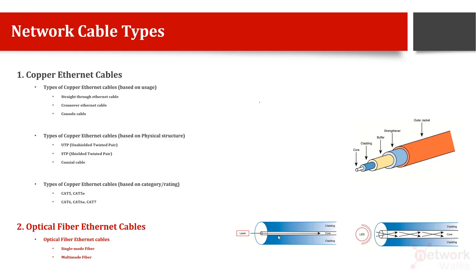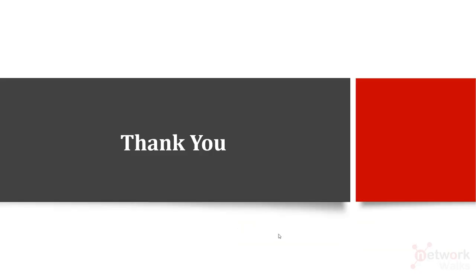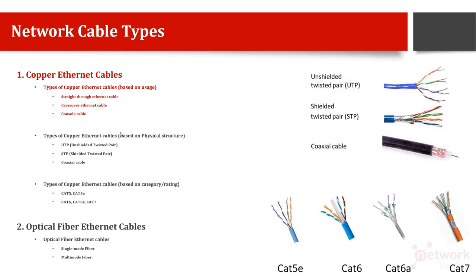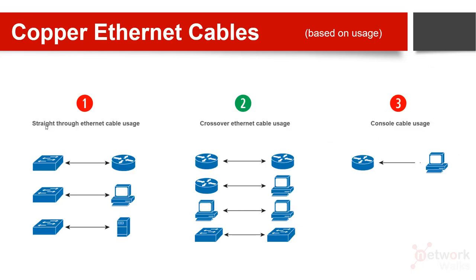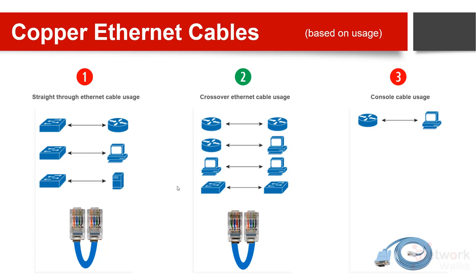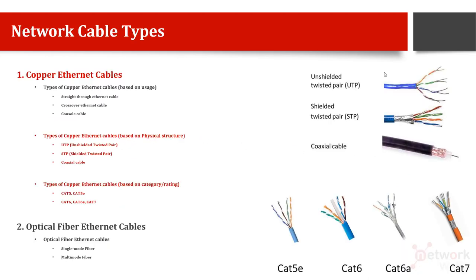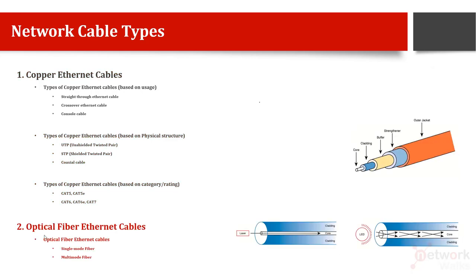To summarize: there are two main cable types — copper and optical fiber. Within copper, there are three classifications: by usage (straight-through, crossover, console), by physical structure (UTP, STP, coaxial), and by category or rating (Cat 5, 6, 7, 8 and onwards). The second major type, optical fiber, has two subtypes: single-mode and multi-mode. If you have any further questions, please write in the comment section.